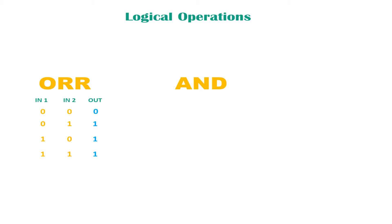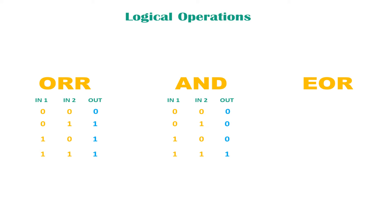Let's go to the AND operation. AND is quite literal to the meaning of AND, just like OR is literal to the meaning of OR. With two inputs and an output: if both inputs are 0, the output is 0. If one is enabled and the other is disabled, the output is still 0. Only when both input 1 and input 2 are enabled is the output enabled, or 1.